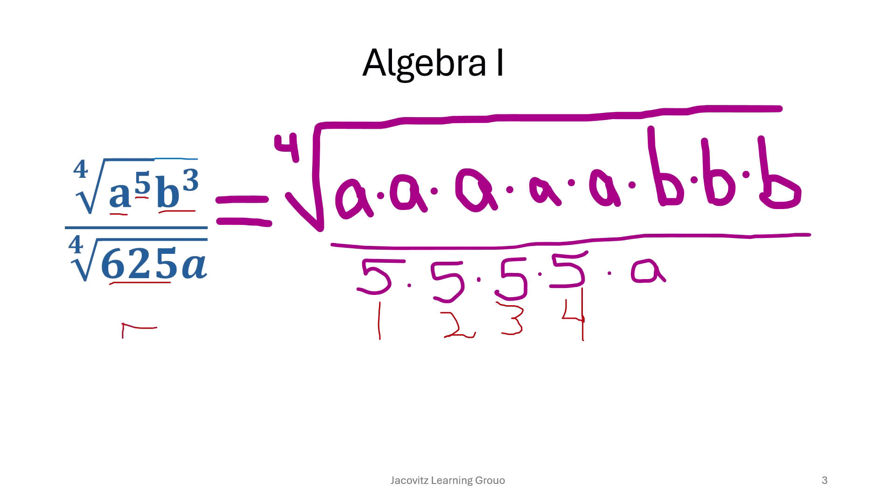There are four roots. So see if you can go 5 times 5 is 25. 25 times 5 is going to be, carrying my 2, 5 times 2 is 10 plus this is 125. And then 125 times 5 is going to be, it's going to end in 5. 5 times 5 is 5, carry my 2, 10, 12, carry my 1 is 625. So that's four times.